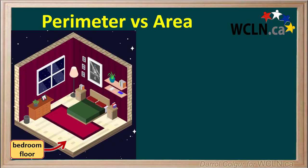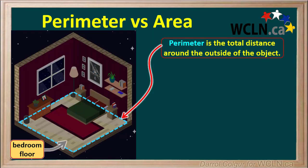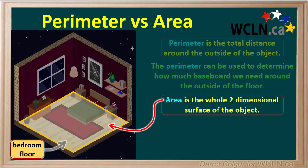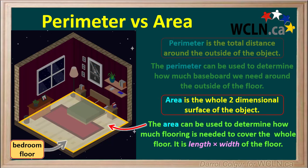Let's consider the plan for a bedroom floor in a house. The perimeter is the total distance around the outside of the floor. If we're putting baseboard around the floor, the perimeter would tell us the total length of the baseboard we need. Area is the total two-dimensional surface of the floor. Area will tell us how much flooring is needed to cover the floor of this room.